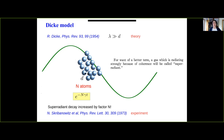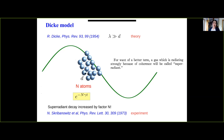Robert Dickey explained in theory that if all atoms are close together — with inter-atomic distances smaller than the wavelength corresponding to the transition — the decay rate of the ensemble of identical indistinguishable two-level atoms will go with an exponential that has a factor N inside, decaying much faster. He called this superradiance: 'for want of a better term, a gas which is radiating strongly because of coherence will be called superradiant.' The superradiant decay is increased by this factor N in the exponent, which is really huge. It took about 20 years until this was first seen in experiments.